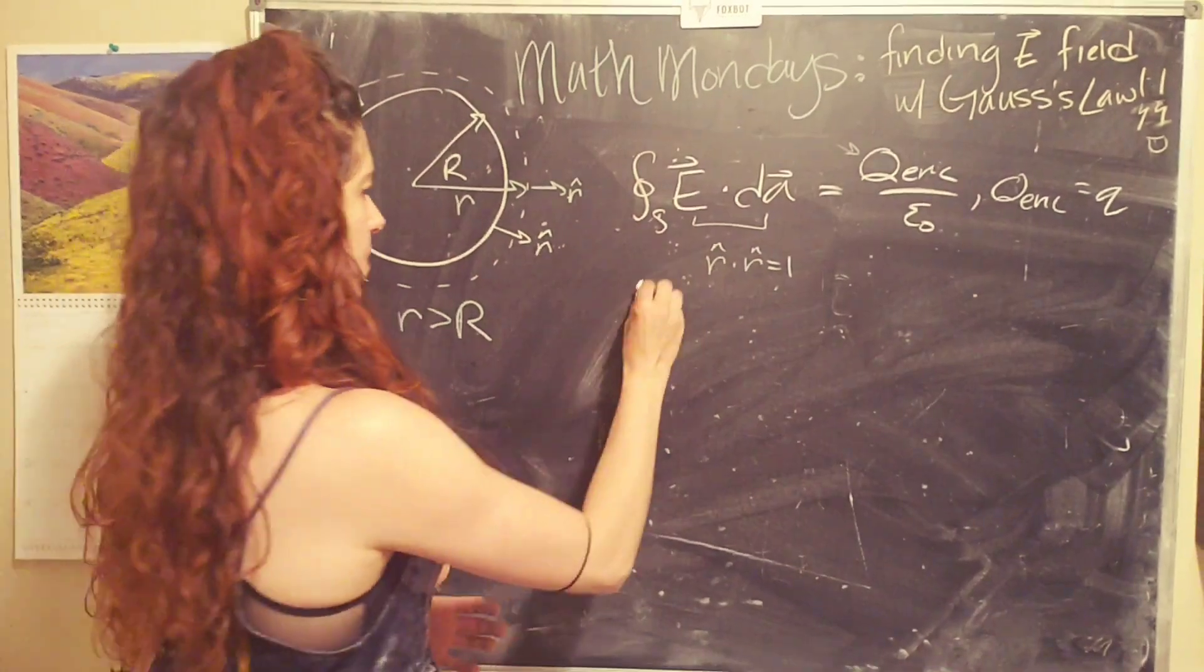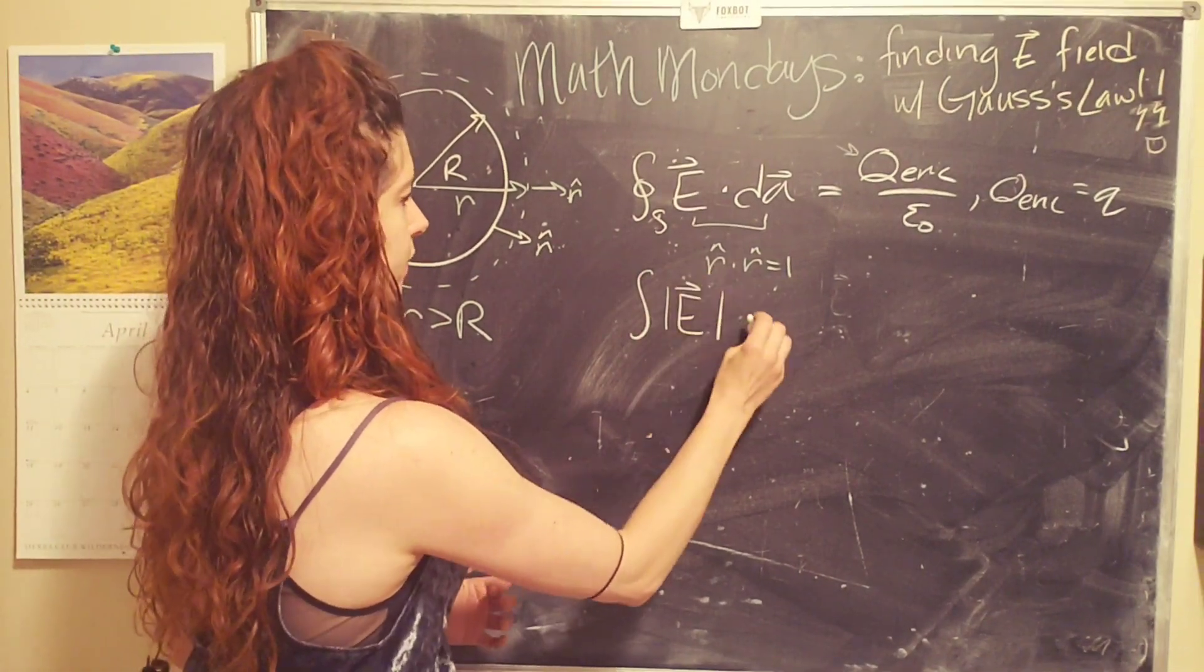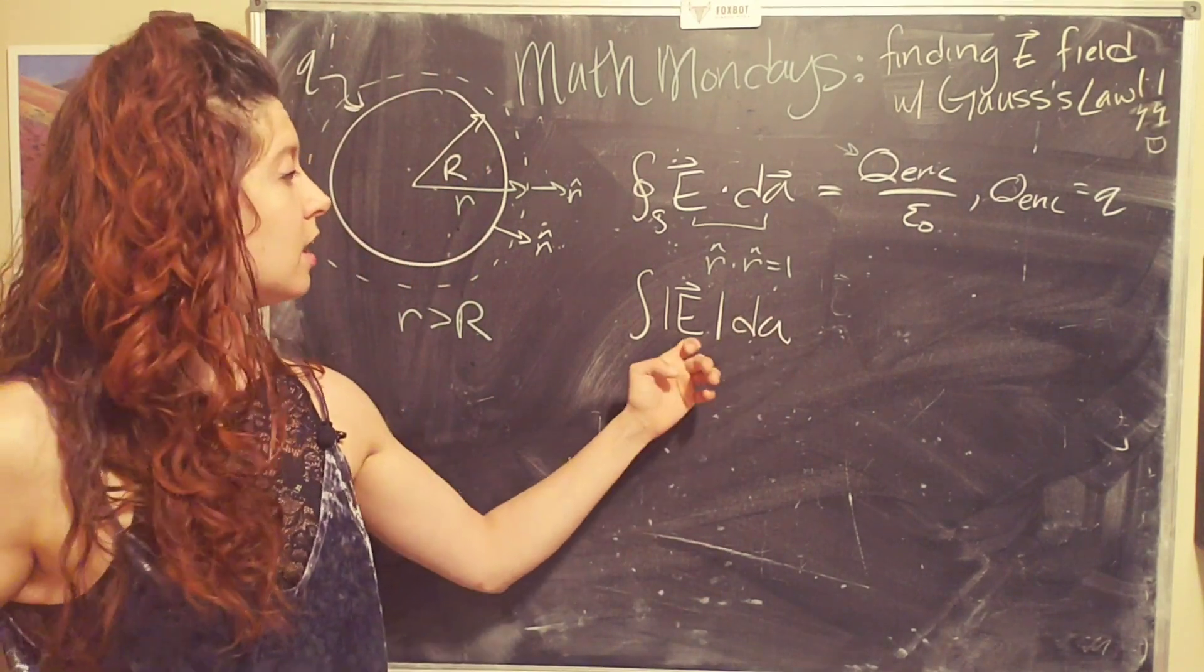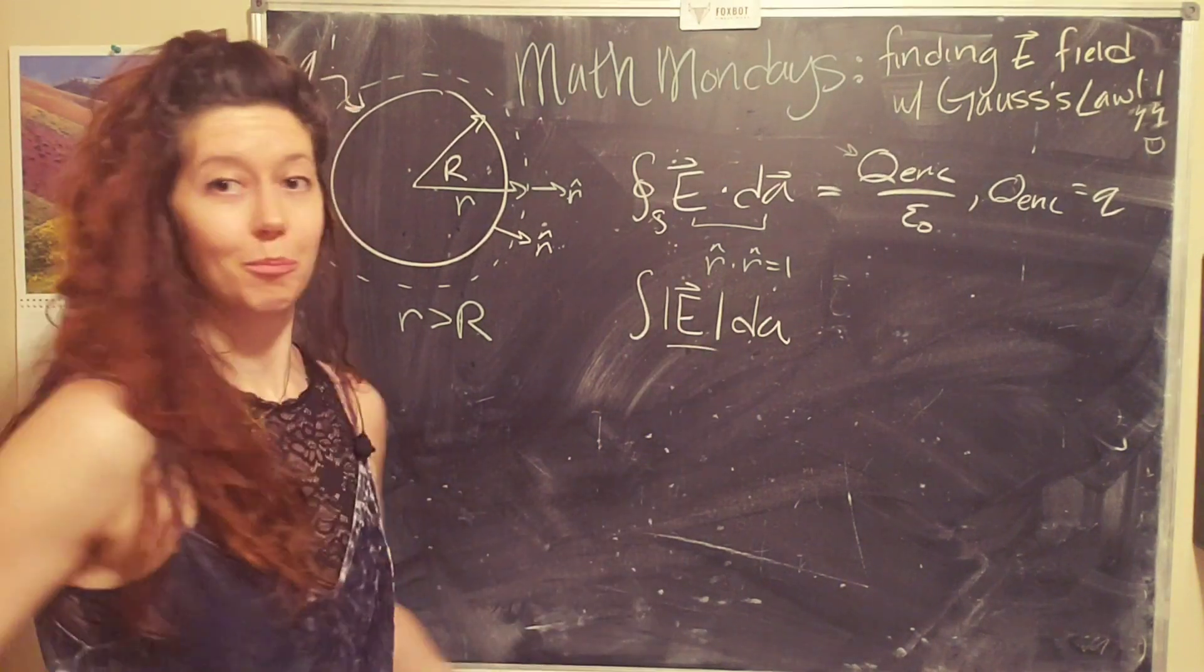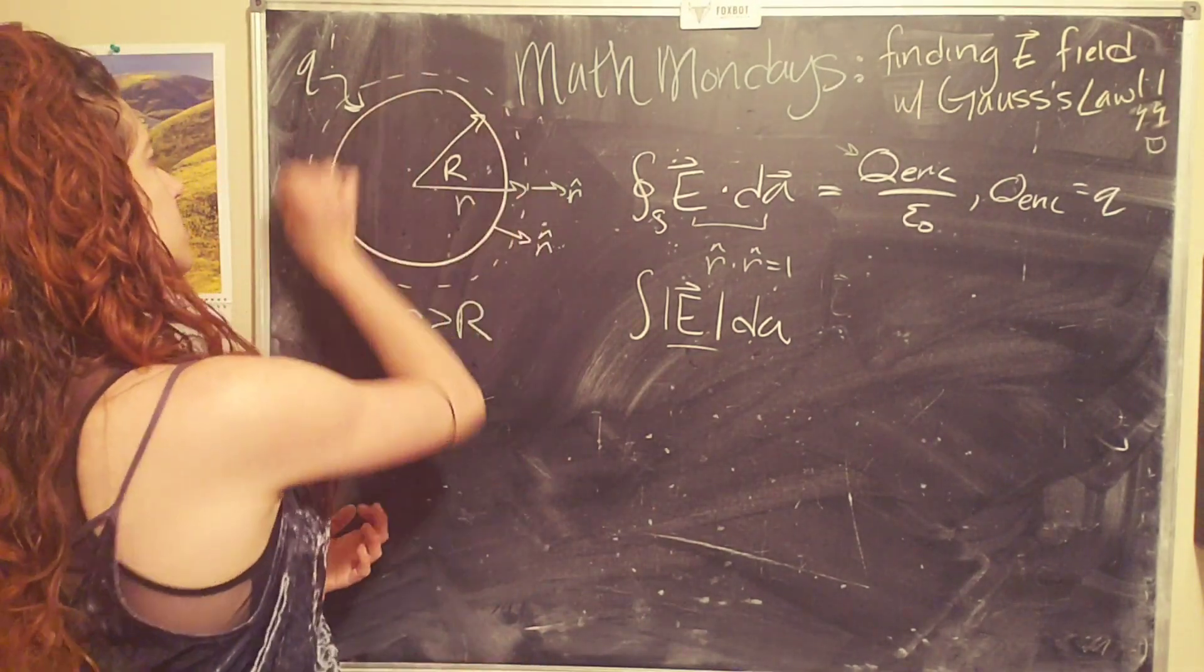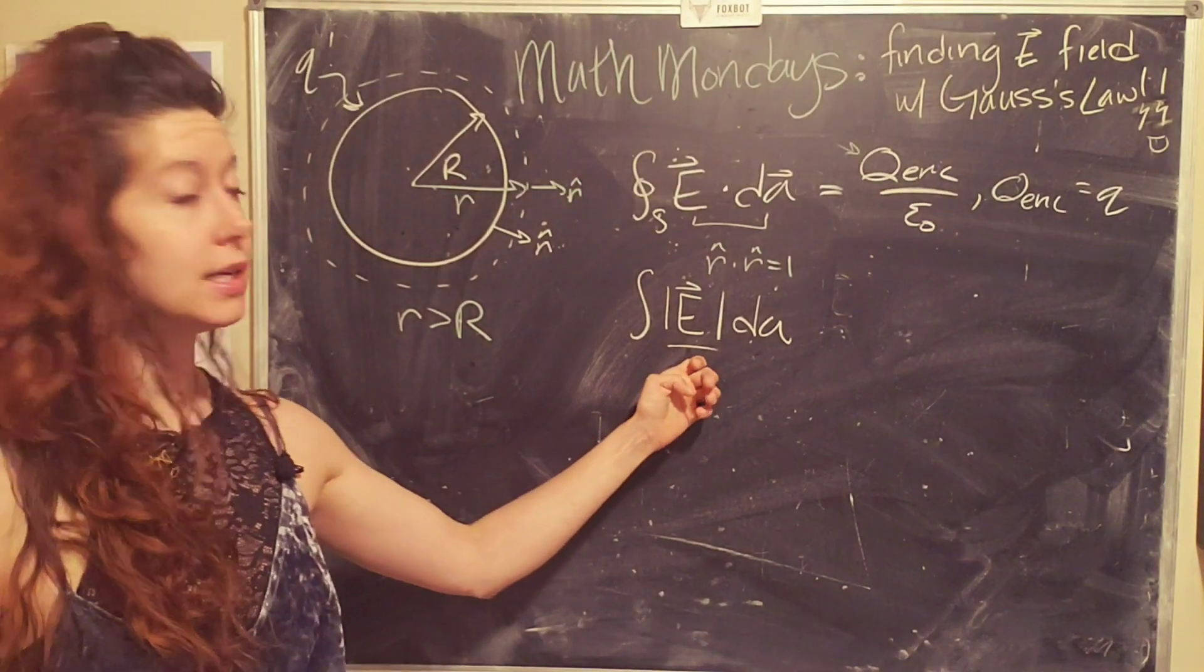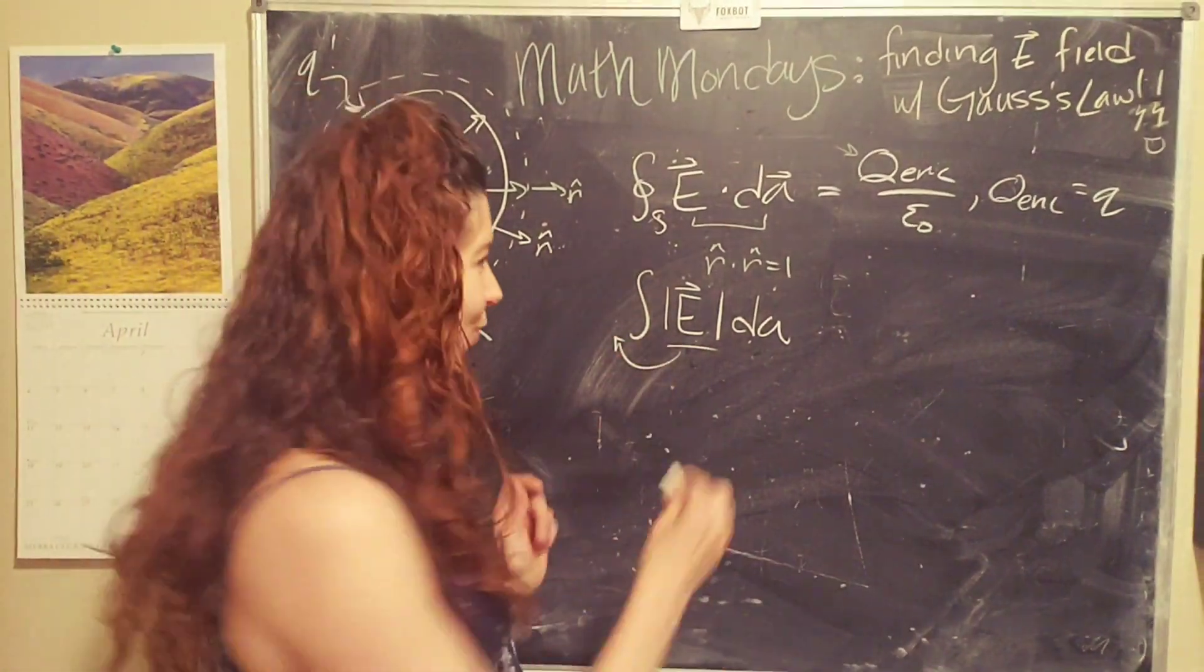So that means we end up with the magnitude of the electric field times the magnitude of dA. The electric field at a constant radius is constant because it depends on the radius. And so as long as our Gaussian surface radius doesn't change, then E is constant, which means we can pull it out of the integral.